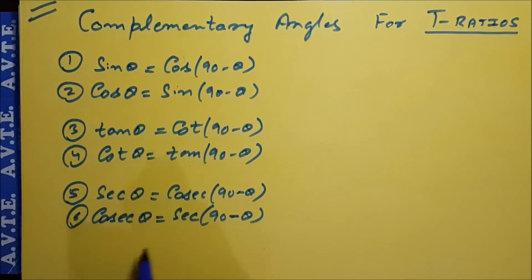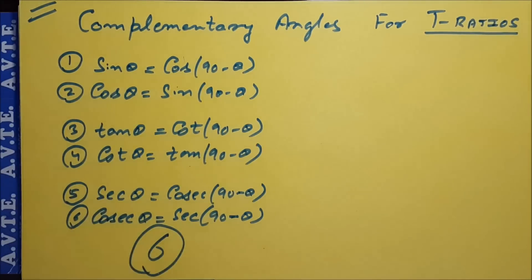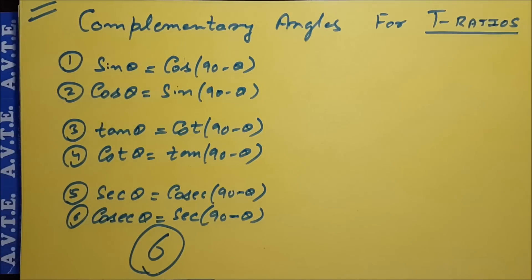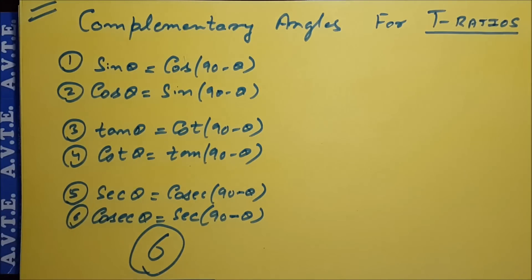These are the six complementary angles formulas for T ratios. It is very important for the basics of trigonometry, especially for class 10th students.